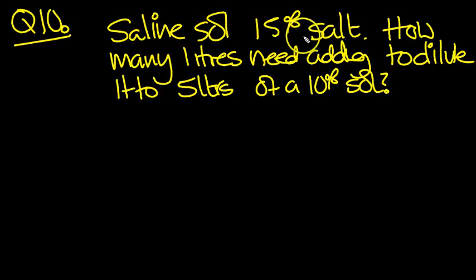Okay then, you've got a saline solution, 15% salt, and you need to find out how many litres do you need adding to it to dilute it to 5 litres of a 10% solution.